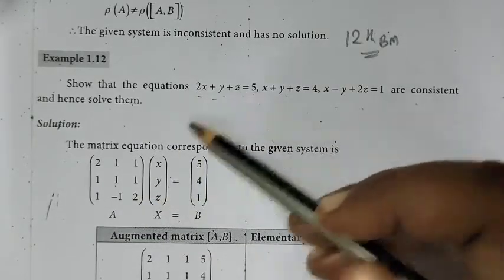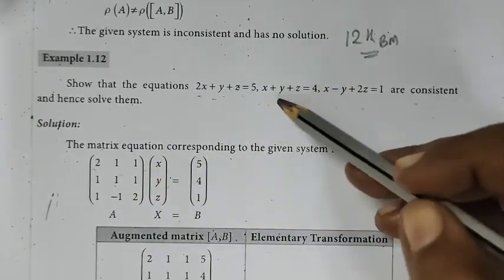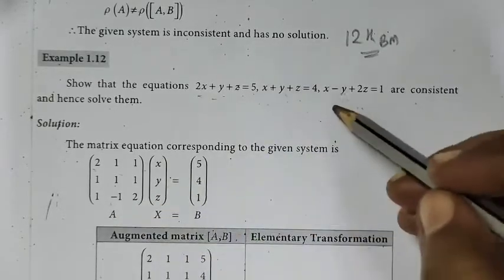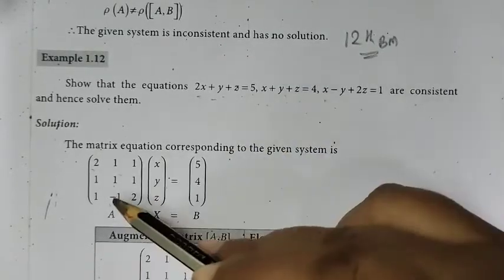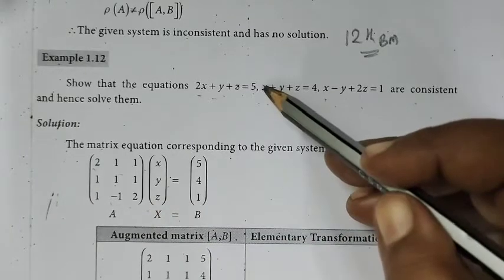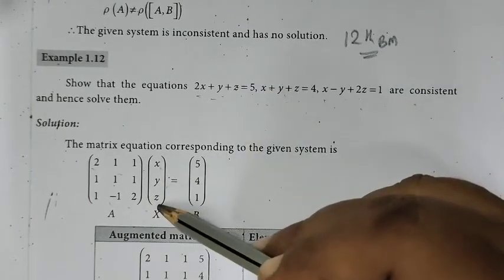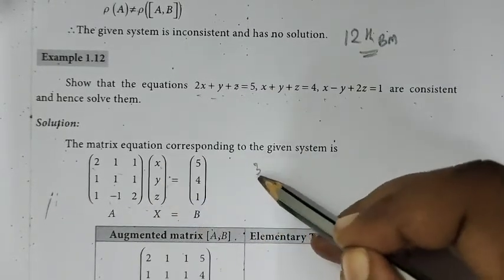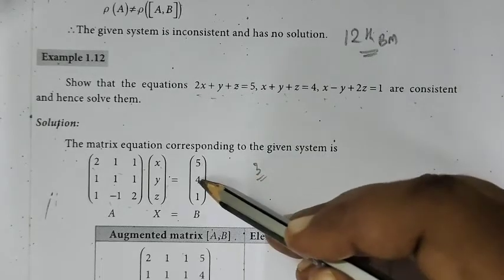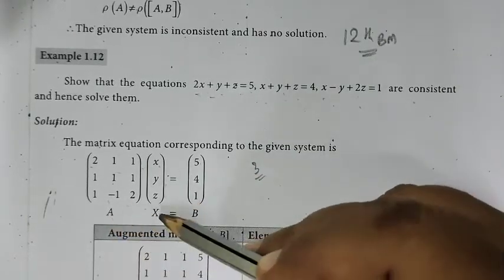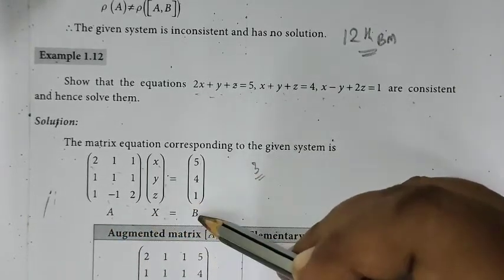The coefficient is 2, 1, 1; 1, 1, 1; 1, -1, 2. Now we collect variables x, y, z. So there are three unknowns. Then constants is 5, 4, 1. This is A and this is x and this is b.